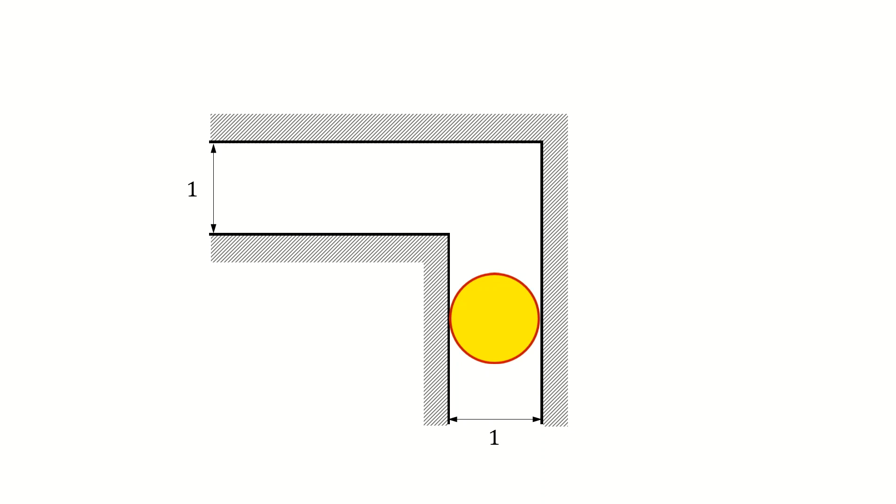How about a square sofa with side length of 1? Okay, the square sofa has obviously a larger area than the round sofa, so we are on the right track.